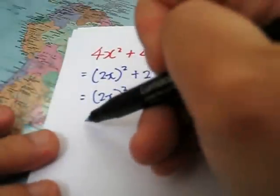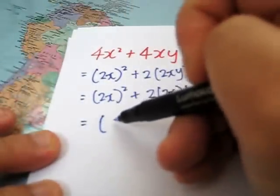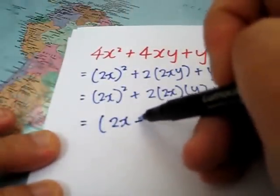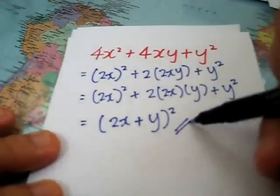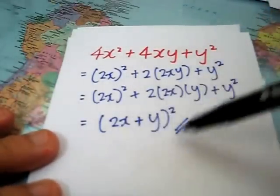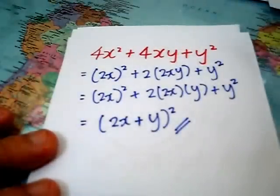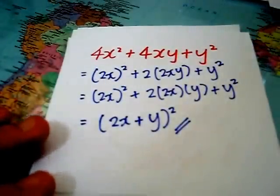And so, it is 2x plus y square. And to check, simply expand this. You will get 4x square plus 4xy plus y square.